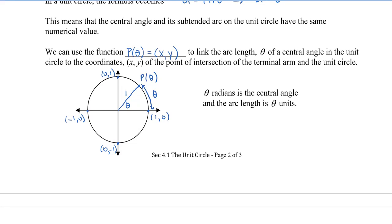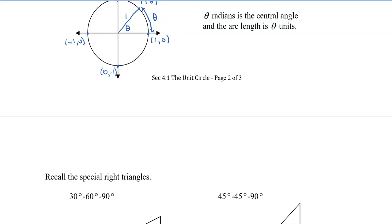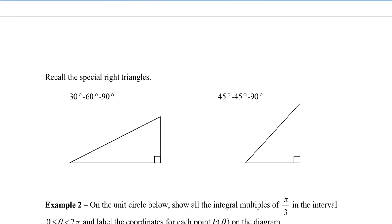Before we use p(θ), we need to recall the special right triangles. The 30-60-90 triangle has a ratio of root 3 : 1 : 2. The 45-45-90 triangle has ratios 1 : 1 : root 2. Now we're working in radians: 30 degrees is pi over 6, 60 degrees is pi over 3, and 45 degrees is pi over 4. I'll write that in my triangle so I can interchange degrees and radians.